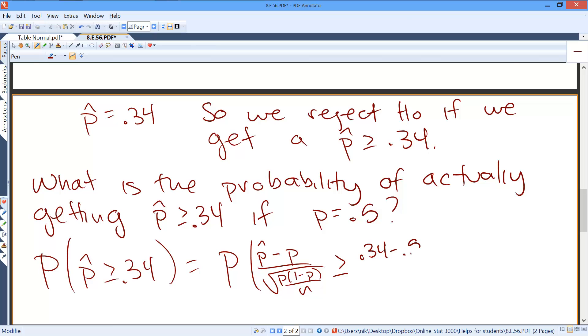And we'll use p-hat minus the true population proportion over the square root of p times 1 minus p over n. So greater than or equal to 0.34 minus 0.5, 0.5 times 0.5 over 44. So this is the probability that z is greater than or equal to negative 2.12.